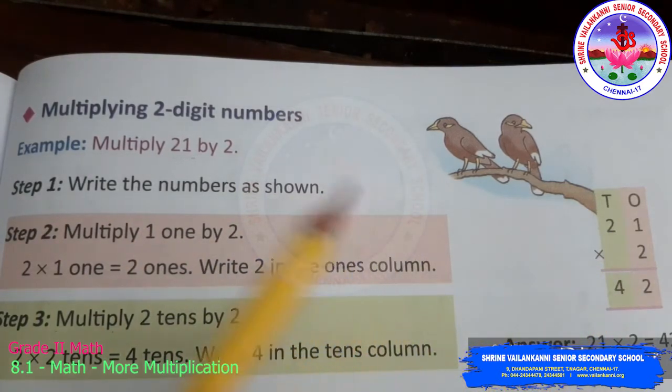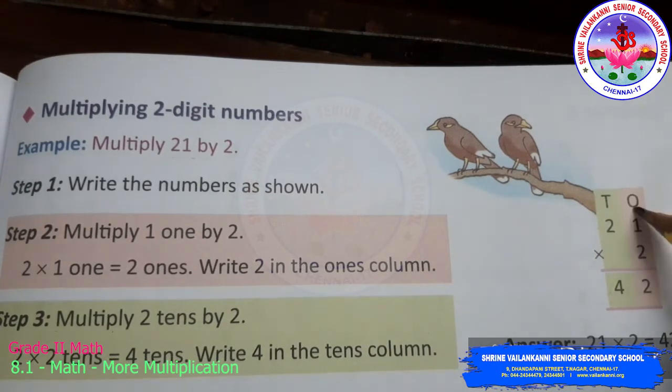What you have to do, likewise, what you did in the addition the same way. First you have to complete the ones part. Then only you should move to the tens part. As you do the addition in the ones, then go to the tens. Now same way. You have to multiply the ones part, then move to the tens part.